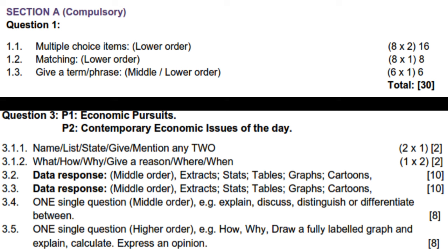In section B, you can be asked in question 3.1.1 or 4.1.1 to list any two characteristics of developing countries. Also expect to define key terms in data response questions 3.2 and 3.3, to describe either economic growth or development for 8 marks, and to distinguish between economic growth and economic development for 4 marks each.